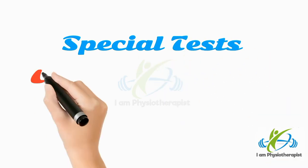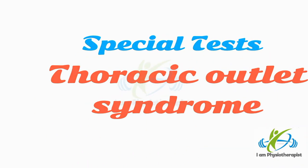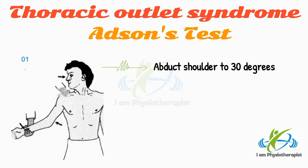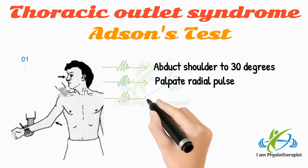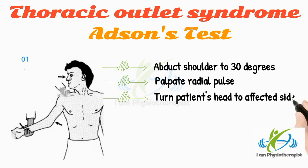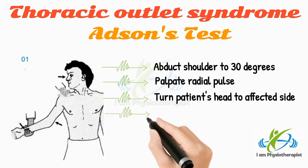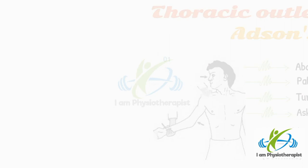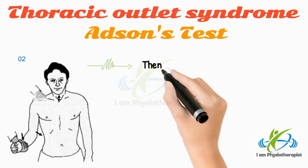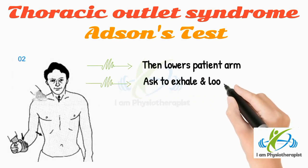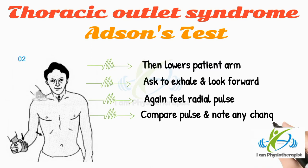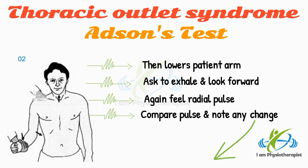Special test for thoracic outlet syndrome: Adson's test. Abduct the shoulder to about 30 degrees and palpate the radial pulse. Ask the patient to turn his head fully to the affected side, then take a deep breath and hold. Then lower the patient's arm to the side and ask him to exhale and look forward. Again feel the radial pulse and compare with the first position. Any change or reduction in pulse is suggestive of thoracic outlet syndrome.